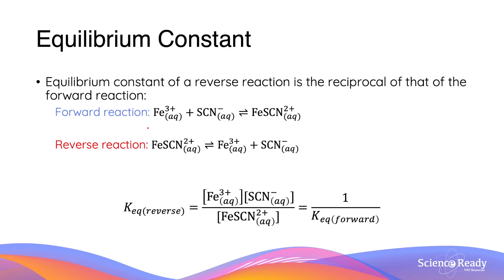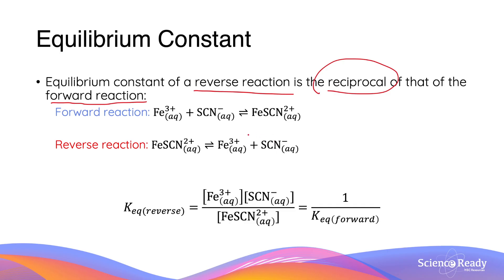Since the equilibrium constant is calculated by dividing product concentration by reactant concentration, if we write a reversible reaction differently, the expression of the equilibrium constant will also change. The equilibrium constant of a reverse reaction is always the reciprocal of that of the forward reaction. For example, the forward reaction where Fe³⁺ and thiocyanate ions combine to form iron-thiocyanate can be rewritten in reverse form — the reactants from before become the products, and the product from before becomes the reactant. The equilibrium constant of the reverse reaction is now written with the new products in the numerator and the new reactant in the denominator.